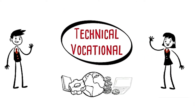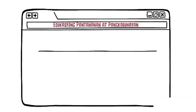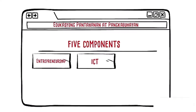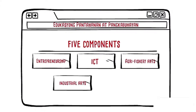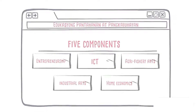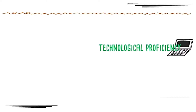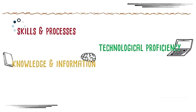This subject primarily commences in the fourth grade up until the sixth grade, and then becomes a technical vocational course when they reach secondary level. The EPP subject under the new curriculum covers five components which are entrepreneurship, ICT, agri-fishery arts, industrial arts, and home economics. These basic skills are geared towards the development of technological proficiency and are anchored on knowledge and information skills and processes.